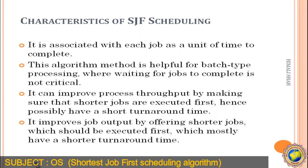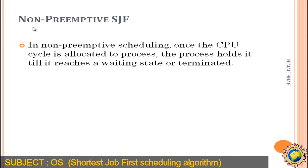With non-preemptive scheduling, once the CPU cycle is allocated to a process, the process holds it until it reaches a waiting state or is terminated. This is the non-preemptive SJF.